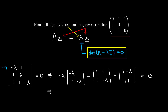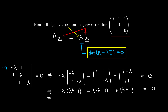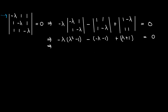We have to calculate all these 2×2 determinants and get the polynomial equation. We get negative lambda times (lambda squared minus 1), minus (negative lambda minus 1), plus (1 minus negative lambda). That last term is just lambda plus 1. All this equals 0. We can see that we're getting a cubic equation in lambda.